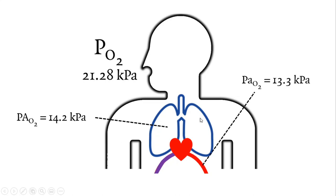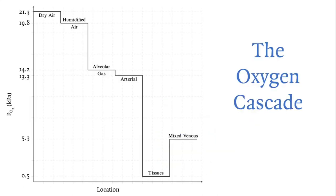From the alveoli, oxygen goes into the arterial blood and it drops again. It drops because there is always a little bit of shunt between the right and the left heart. So the partial pressure of oxygen in the arteries — lowercase 'a' — is 13.3 kilopascal. There is a cascade of oxygen pressures from the atmosphere all the way down to the bloodstream and then to the tissues.